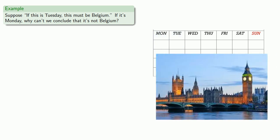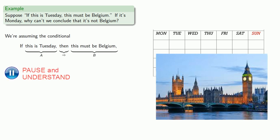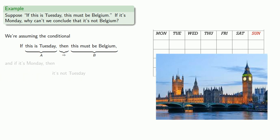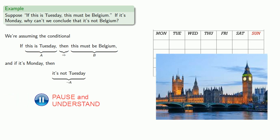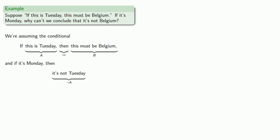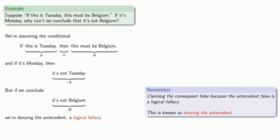'Suppose' is math speak for 'let's assume this is true.' We're assuming the conditional 'if this is Tuesday, then this must be Belgium' — that's 'if A, then B.' If it's Monday, that's the same as saying it's not Tuesday — that's the negation of A. But if we conclude it's not Belgium — the negation of B — we're denying the antecedent. That's our logical fallacy.